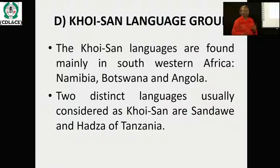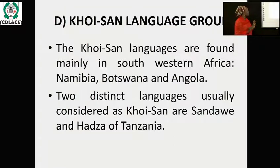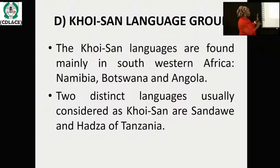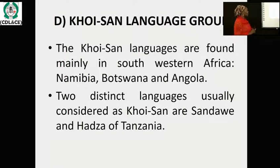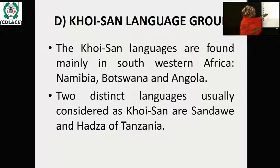The next one is the Khoisan language. The Khoisan languages are found mainly in Southwest Africa — for example, Namibia, Botswana, and Angola. Also, the two distinct languages usually considered as Khoisan are the Sandawe and the Hadza of Tanzania. These people speak the Khoisan.